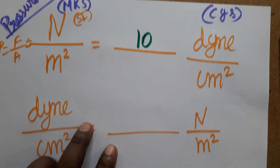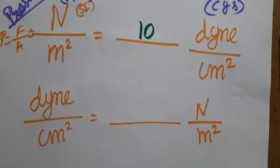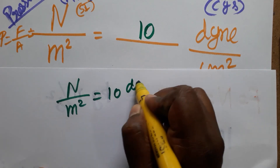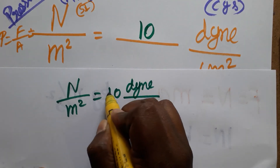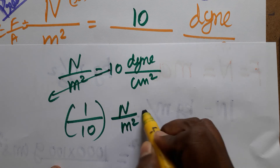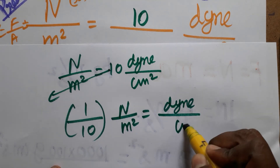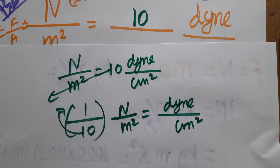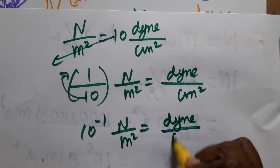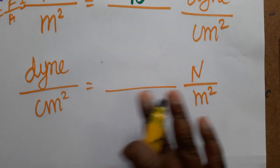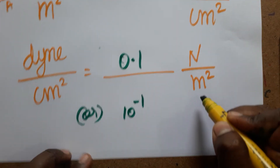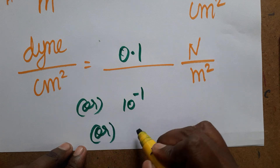Again, dyn per centimeter square is equal to dash Newton per meter square — the opposite conversion. We know Newton per meter square equals 10 dyn per centimeter square. Bringing 10 to the denominator by cross multiplication: 1/10 Newton per meter square equals 1 dyn per centimeter square. So dyn per centimeter square equals 0.1 Newton per meter square, or 10⁻¹ Newton per meter square, or 1 divided by 10 Newton per meter square.